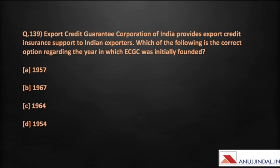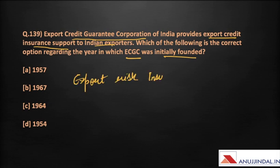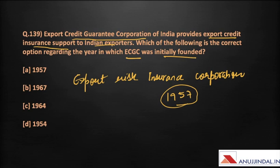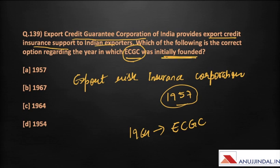The next question: Export Credit Guarantee Corporation of India provides export credit insurance support to Indian exporters. Which of the following is the correct option regarding the year in which ECGC was initially founded? The Export Risk Insurance Corporation was set up in 1957 to offer insurance to exporters against exchange controls. In 1964, it was renamed to Export Credit Guarantee Corporation, that is ECGC. Since only the renaming was done in 1964, the answer is option A — 1957.